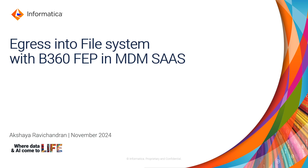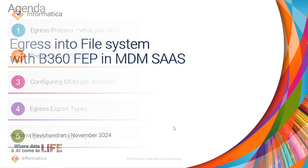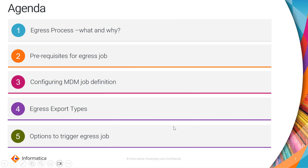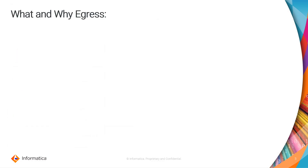Hi, my name is Akshaya Ravichantran and today I'm going to do a small demo on how you can egress data into a file system with the B360 FEP connector in MDM SaaS. Let's see what we're going to talk about today: what is and why the egress process is needed, the prerequisites, how to configure the job definition, the MDM B360 console, the different export types, and the options to trigger and monitor the egress job.